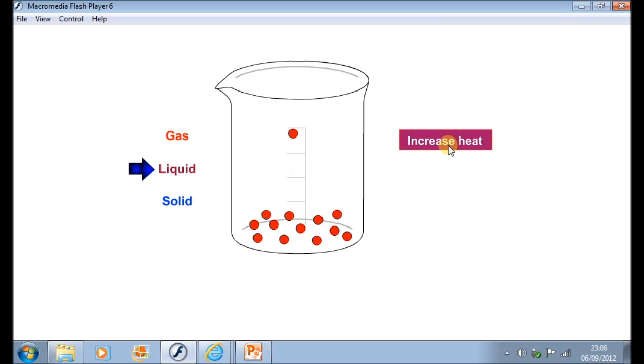Now here you can see, in the liquid, the particles are moving over each other. And they are moving much faster than they did in the solid. That's because they have more energy as a liquid than they did as a solid.